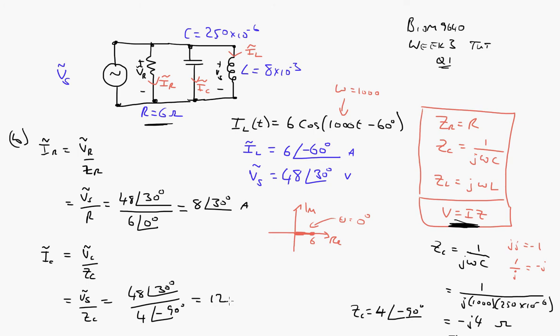So we get 12 at an angle of... Well, it's 30 minus minus 90. So that's 30 plus 90 is 120 degrees. And it's a current, so that's in amps.